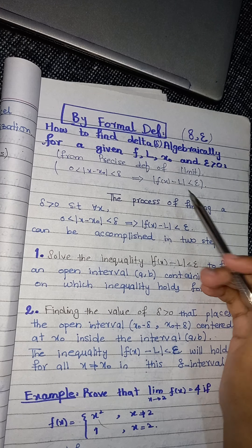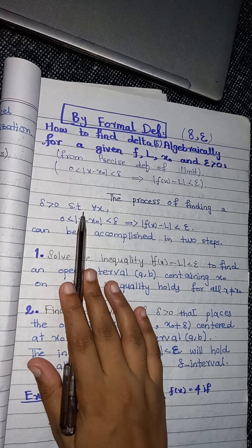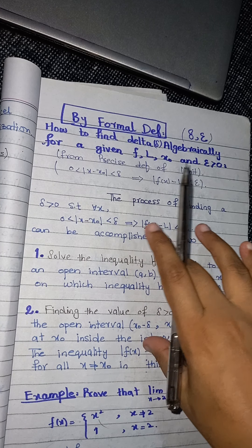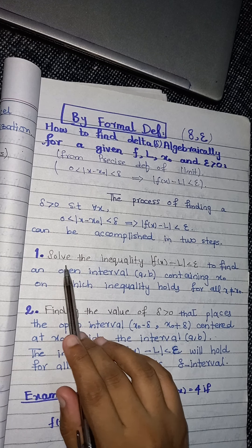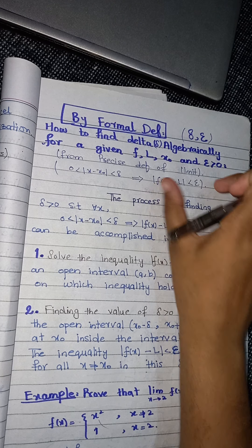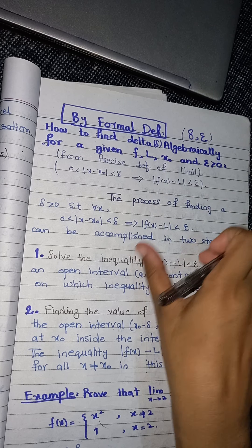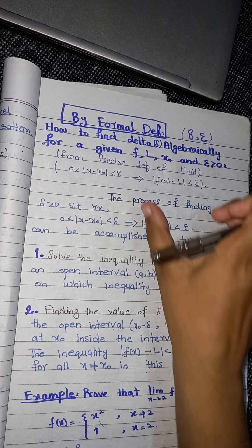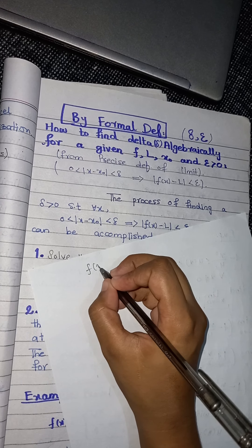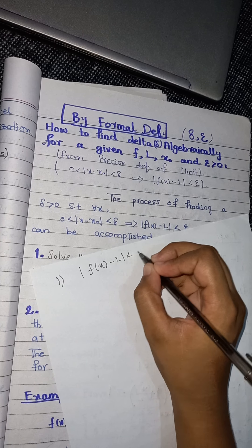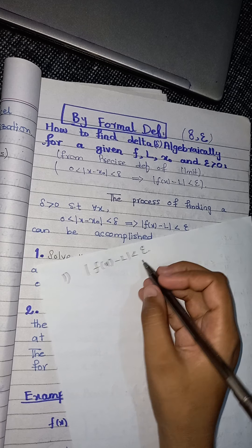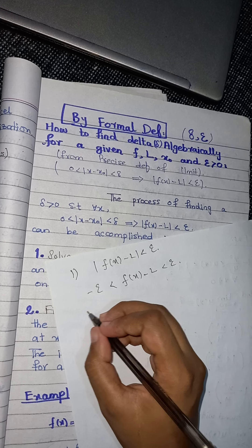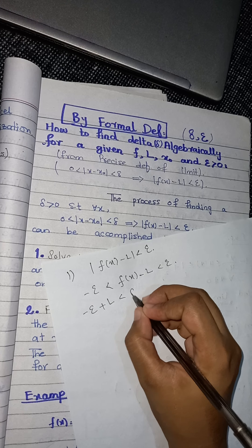The process of finding an absolute delta greater than zero such that for all x this condition implies the limit condition can be accomplished in two steps. The first step is to solve the inequality involving epsilon — that is, the inequality |f(x) − l| < epsilon — to find an open interval (a, b) containing x naught on which the inequality holds for all x not equal to x naught. When we open this inequality we get a certain form, and adding l gives the interval.